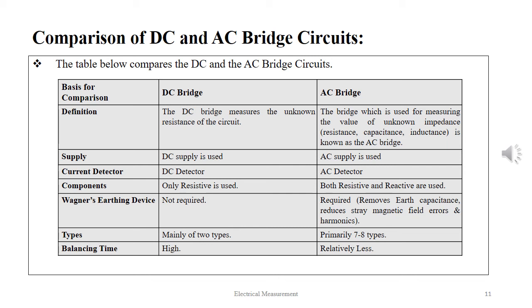The supply of DC bridge is always a DC supply, while that of an AC bridge is AC supply. The detector in DC bridge is DC detector, and that of an AC bridge is an AC detector. The components under measurement are only resistive in DC bridge, while it can be both resistive and reactive in AC bridges.